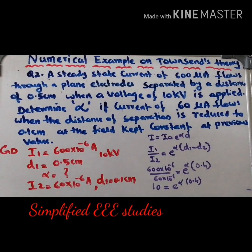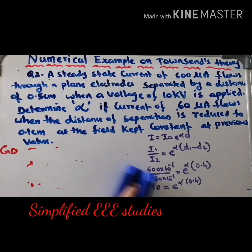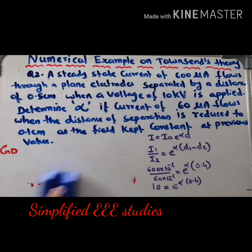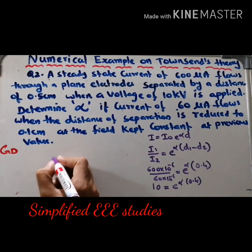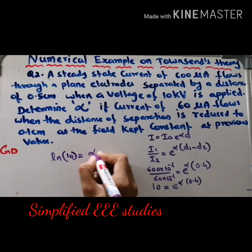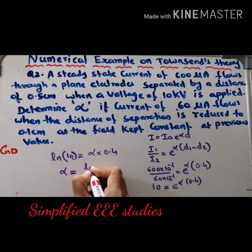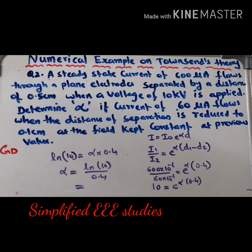Taking the natural logarithm of both sides: ln(10) = α × 0.4. Therefore alpha = ln(10) / 0.4. Calculating this value gives approximately 5.75.